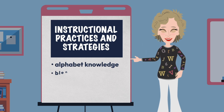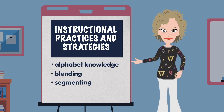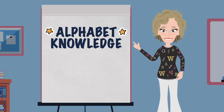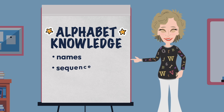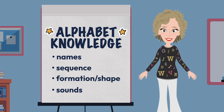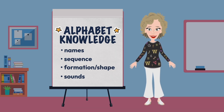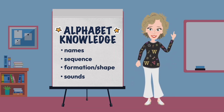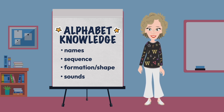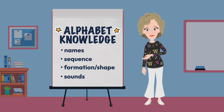Alphabet knowledge, blending, segmenting, and irregular words. Alphabet knowledge refers to one's understanding of letters, their names, sequence, formation, shape, and sounds. Our language is based on sounds and the letters that represent them, so it is crucial that we teach these skills with intent and provide lots of opportunities for students to engage in activities that draw their attention to their names, shapes, and sounds.